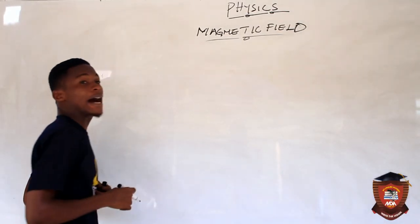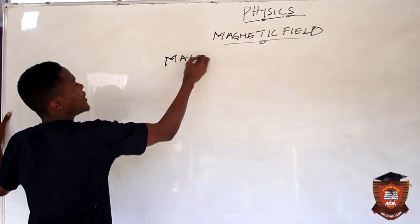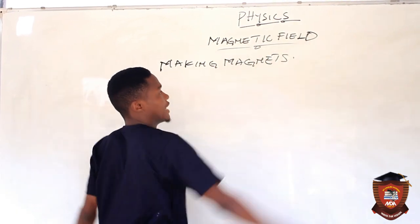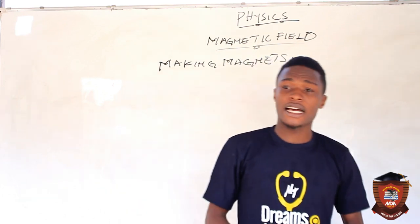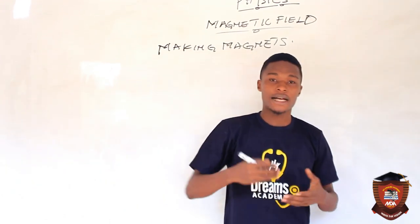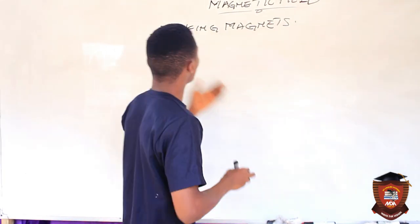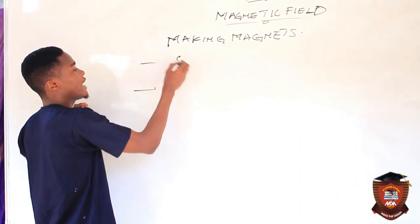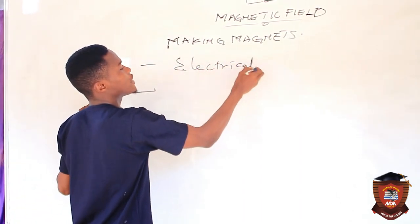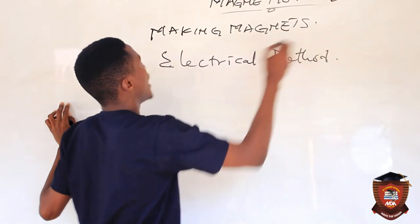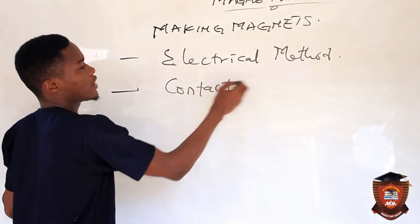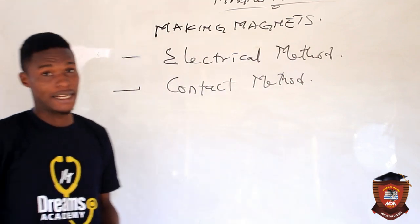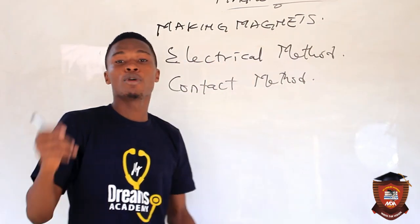Now we are going to talk about making magnets. In industries, magnets are used in many things. There are basically two methods of making magnets: the electrical method and the contact method.